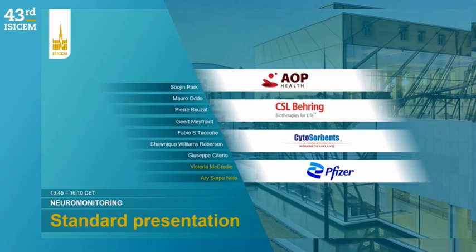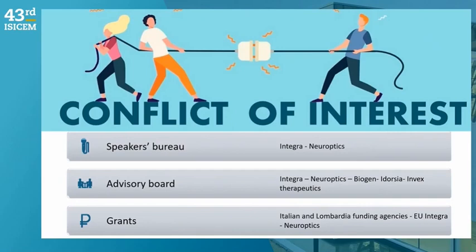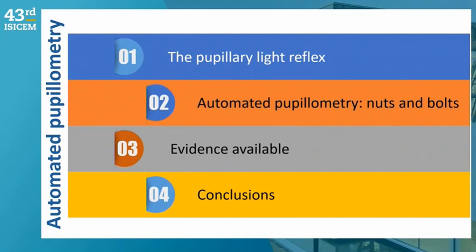Thank you very much, Victoria. I think we are right on time — we have one minute in advance. So we'll discuss automatic pupillometry today. These are my conflicts of interest: I received a grant from one of the companies producing pupillometry devices, and I am on the advisory board of this company. This is the agenda of my talk.